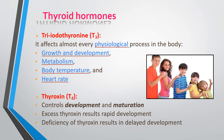T4, that is thyroxine, is very helpful and controls development and maturation. Excess thyroxine results in rapid development, while deficiency of thyroxine results in delayed development. So it is very helpful in controlling the development and maturation of our body.